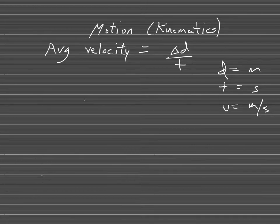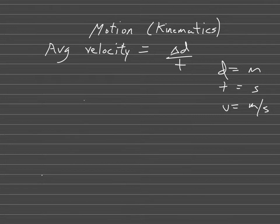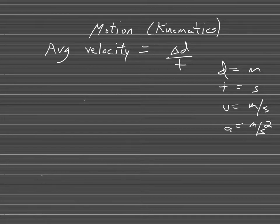But there's nothing about acceleration in the average velocity equation. There are other equations that relate acceleration to velocity, time, and displacement. They can tell us instantaneous velocity — our velocity at a specific time — and also our acceleration, which is the rate of change of velocity over time. Acceleration is measured in meters per second squared.